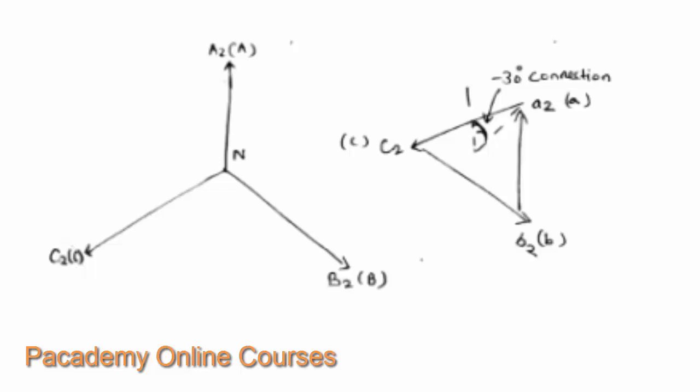And this minus 30 degree phase shift in star-delta connections gives the name of this connection as a minus 30 degree connection star-delta connection. And the next kind of connection is a plus 30 degree star-delta connection.